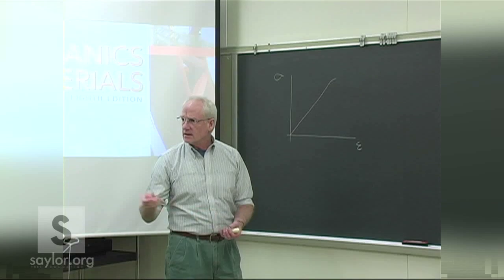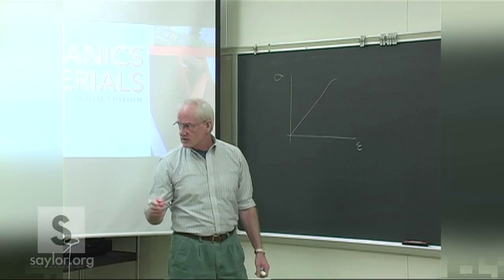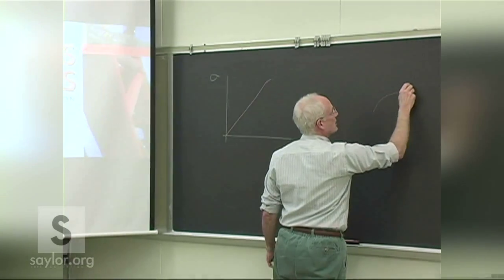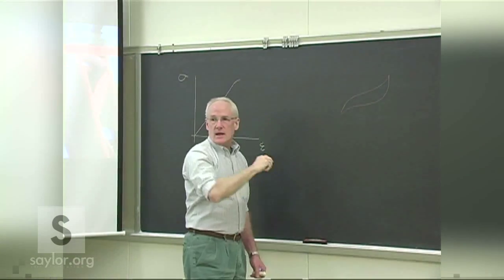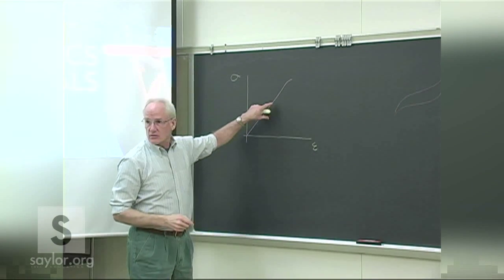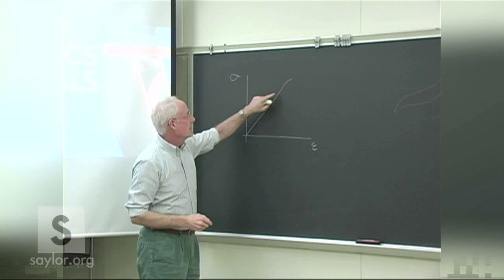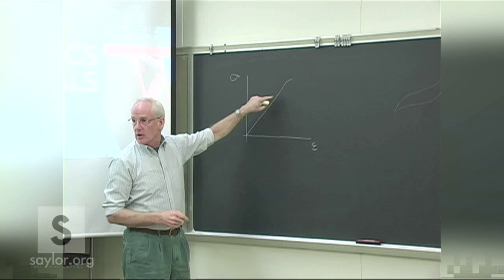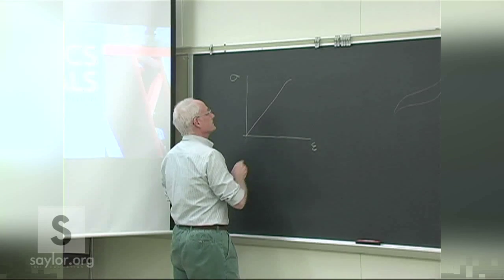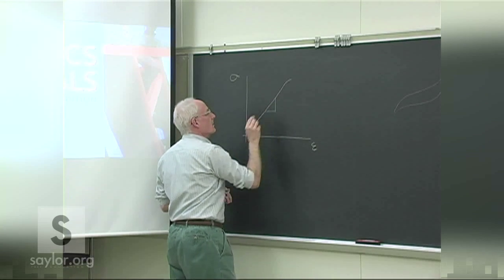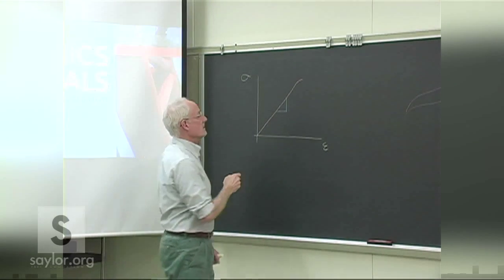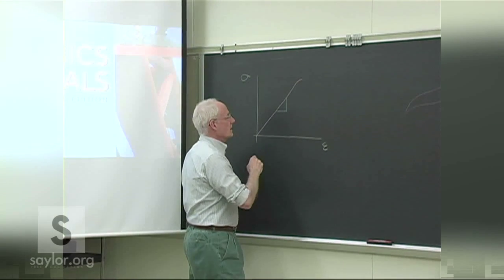Hysteresis is any curve that goes one way up and comes another way down. We do not have hysteresis in this region. We go up this line, relieve the load, and come right back down this line. That means it's very, very predictable, and the slope itself is a characteristic of the material whether loaded or unloaded.